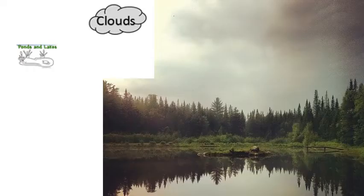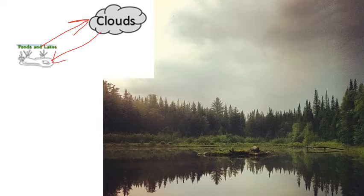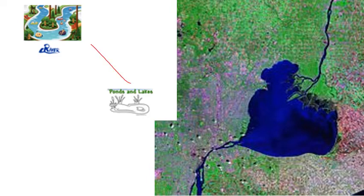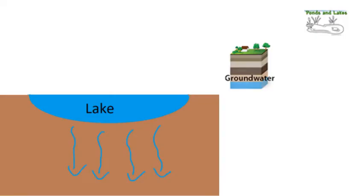For lakes and ponds, we should already have that water can evaporate from a lake and make a cloud, and rainfall from a cloud can fall right into a lake. Lakes and ponds can also go into rivers and rivers into lakes — already covered. Lakes and ponds can also go into groundwater: water from a lake can seep into the ground. And just like with rivers, sometimes groundwater pops up out of the ground and makes a little lake, so this is another two-way exchange.